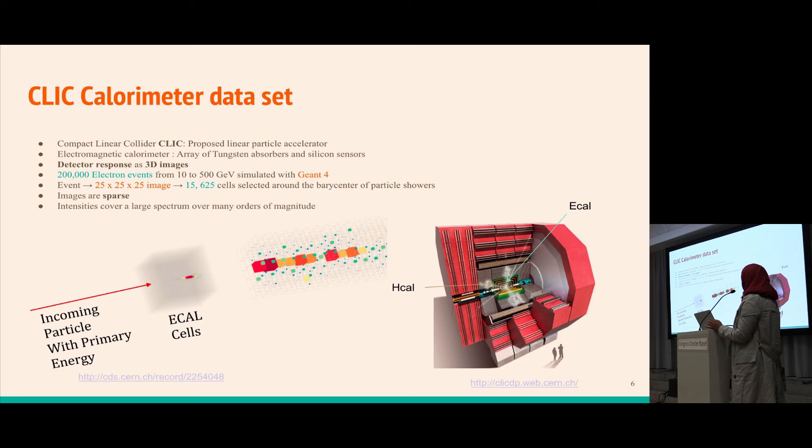A particle comes at a certain primary energy and leaves energy in different e-cal cells, recorded as an image. These images differ from traditional images in that they are sparse and the intensities cover a much larger spectrum, spanning many orders of magnitude.